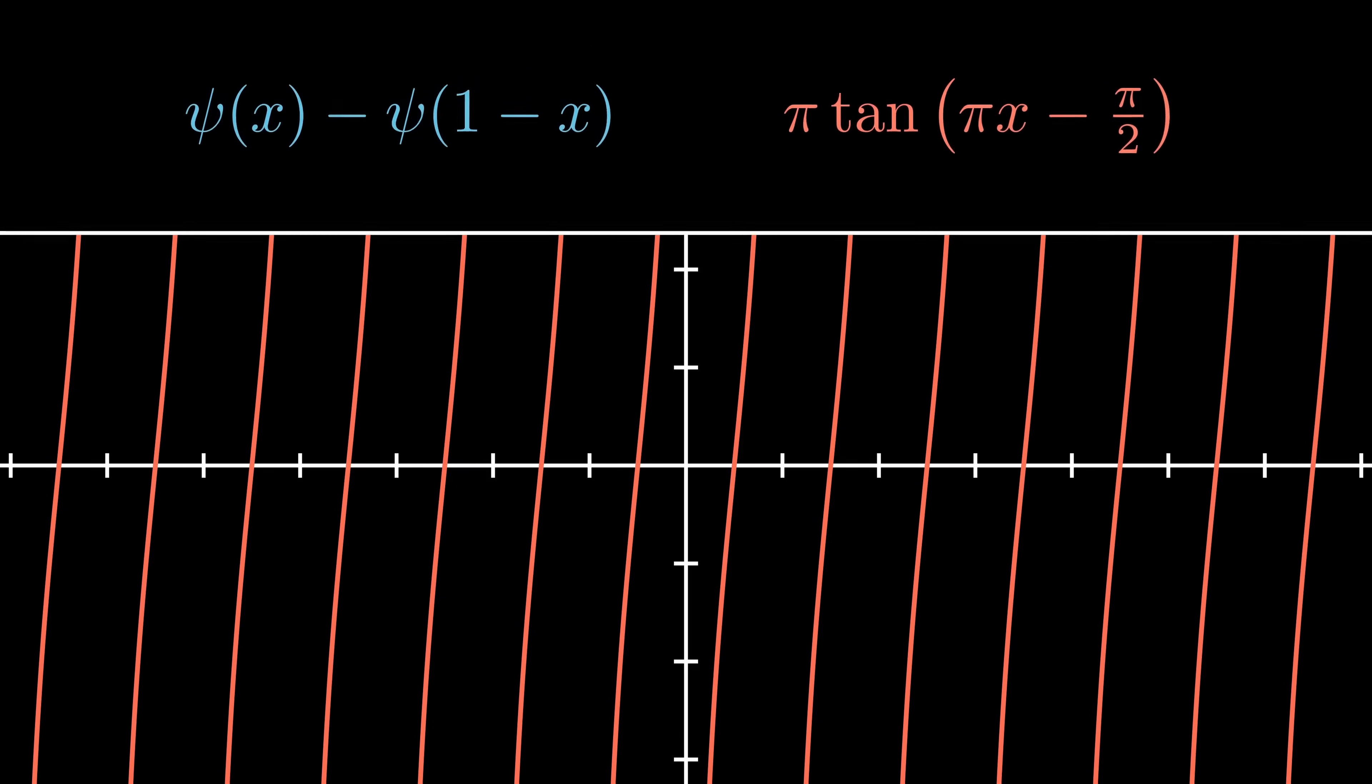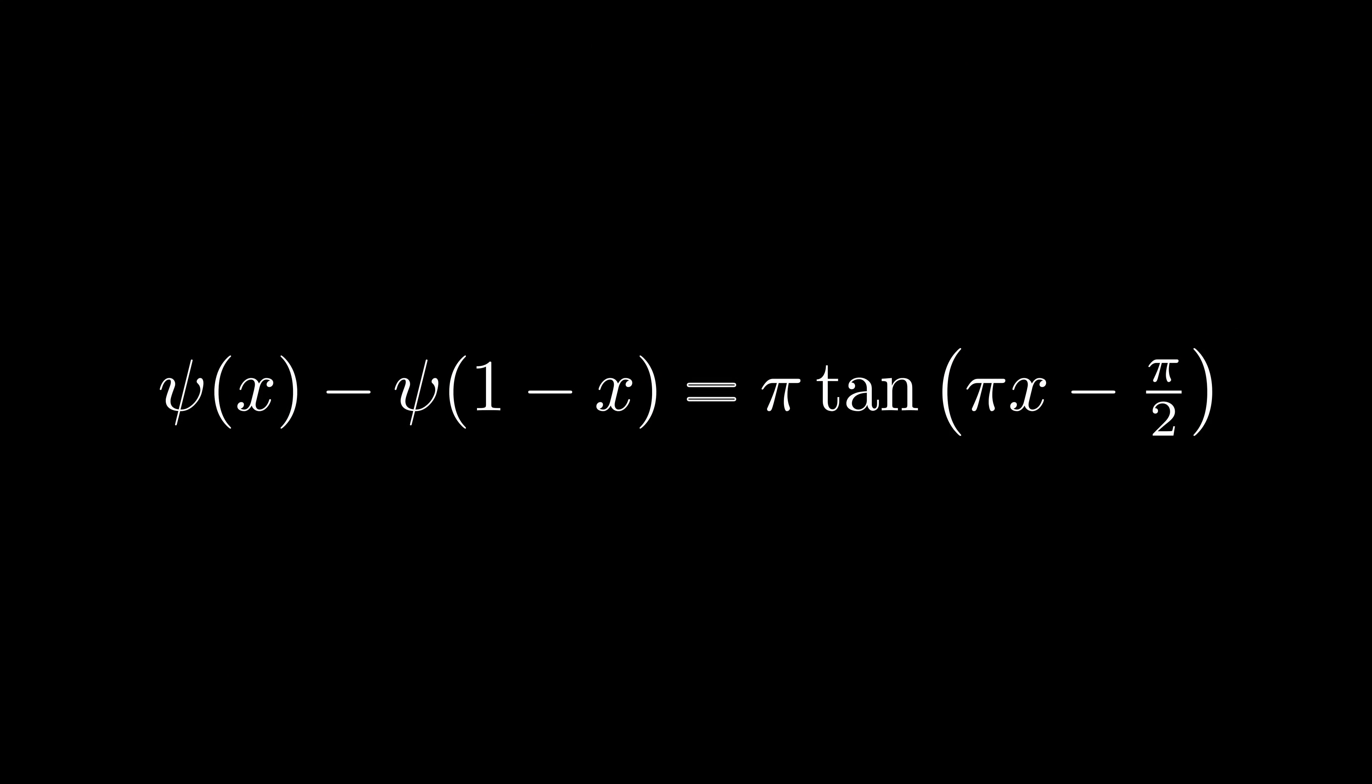So this is the connection between the harmonic numbers, or the digamma function, and trig. Now one quick modification, tangent offset by pi over 2 is the same as negative cotangent, and that takes up a little less space. So I'll use cotangent instead of tangent for the rest of the video.